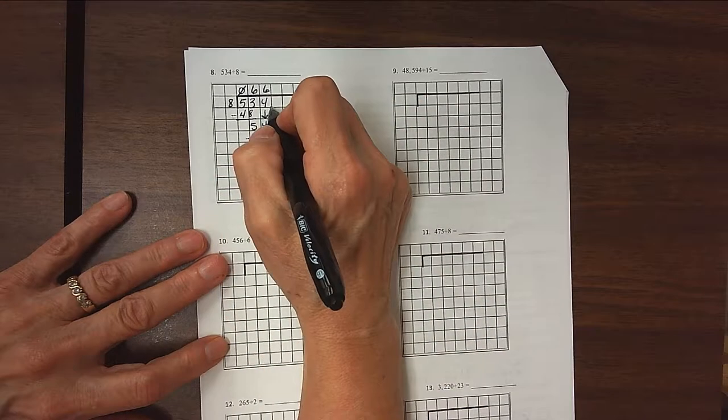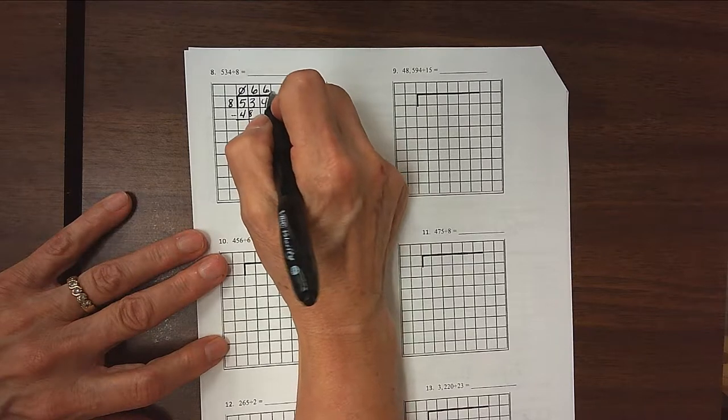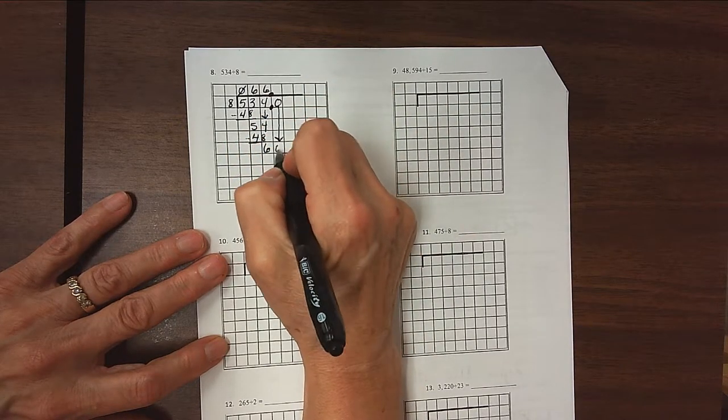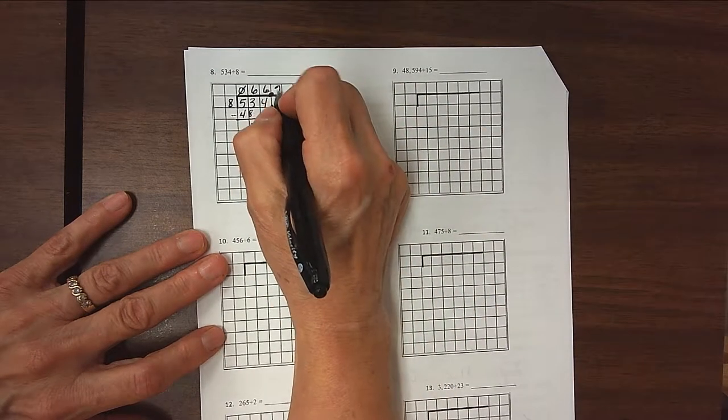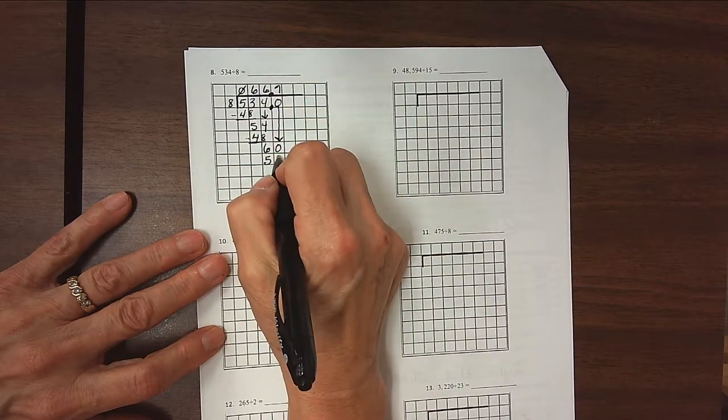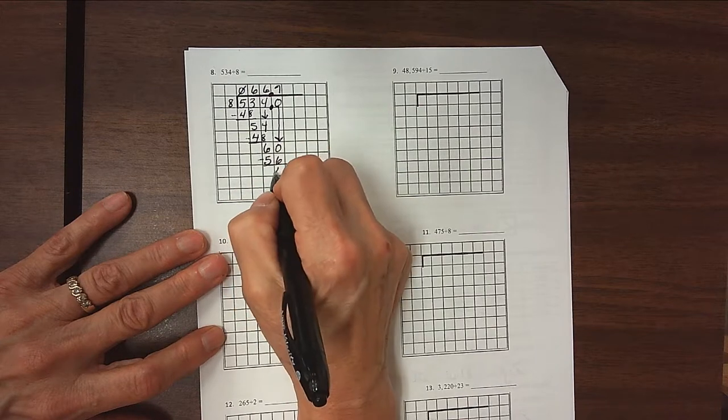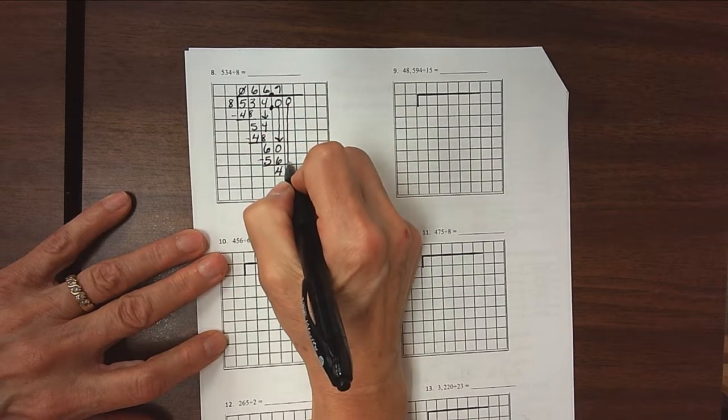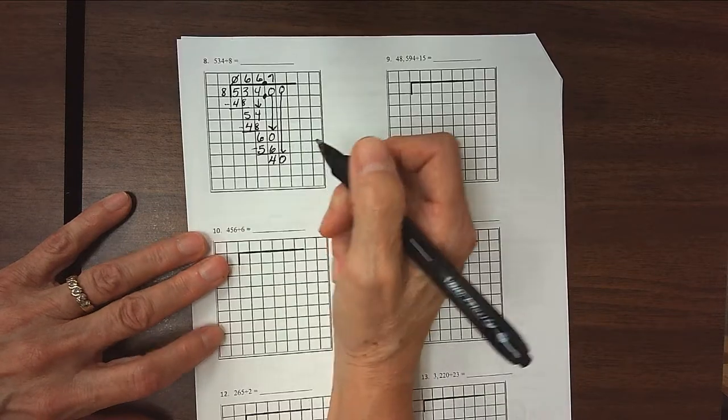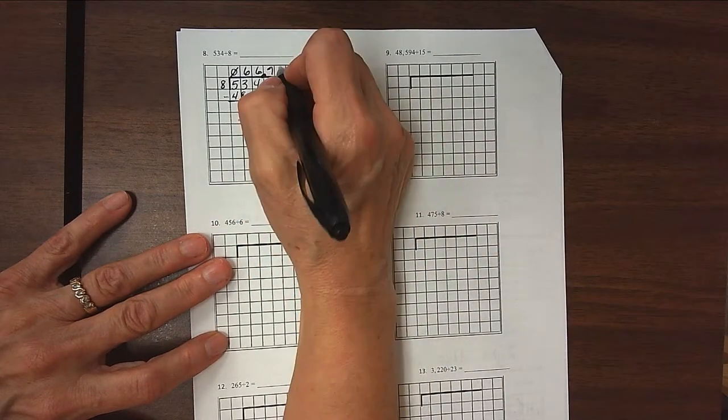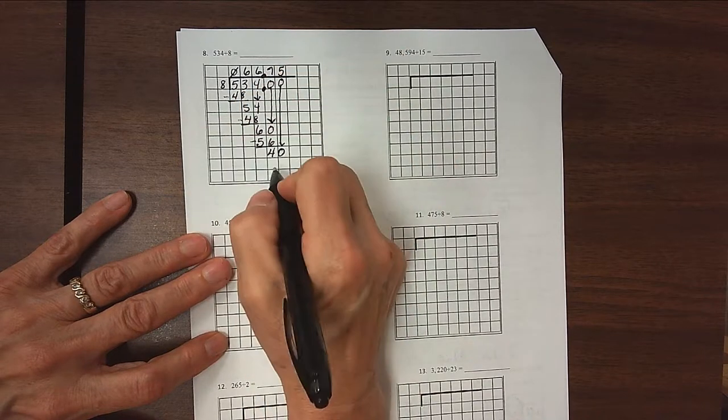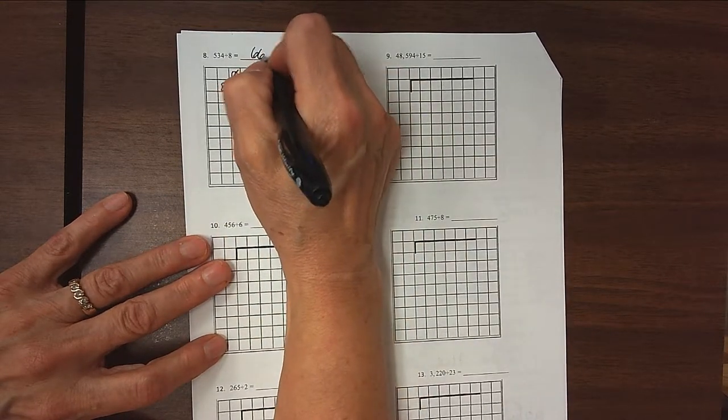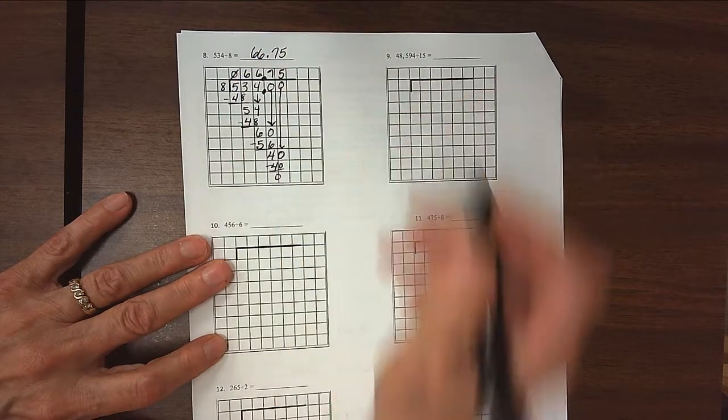We can't have remainders, so we add a decimal point in and out of the house and add a 0. Bring down our 0. 8 divides into 60 seven times because 7 times 8 is 56. We subtract, and we get 4. Still a remainder. And we're going to bring down a 0, and then 8 divides into 4 five times exactly. And so we subtract this 40, and we're done. So our answer should be 66 and 75 hundredths for number 8.